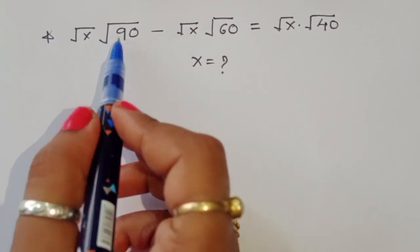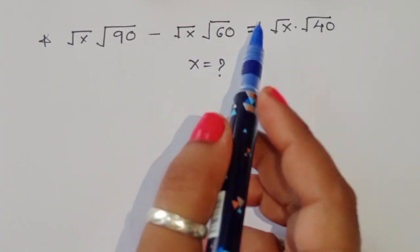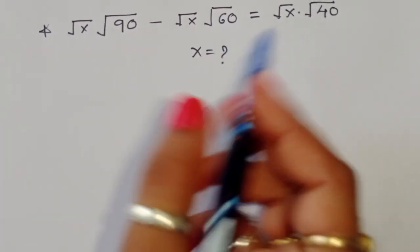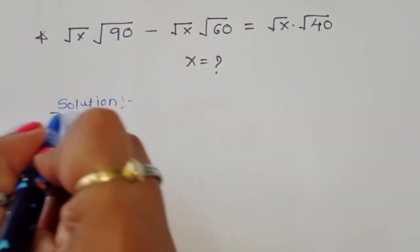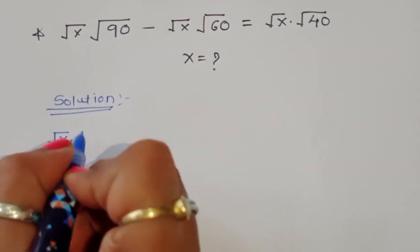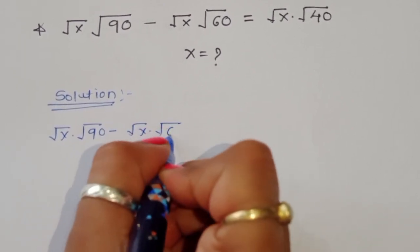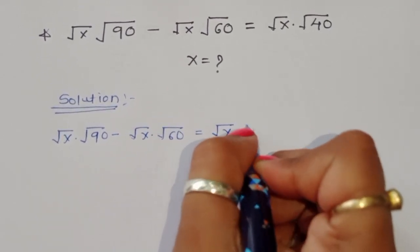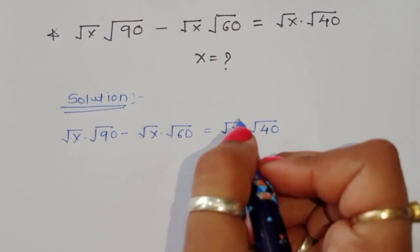The question is: square root of x times square root of 90, minus square root of x times square root of 60, is equal to square root of x times square root of 40. We have to find out the value of x here.